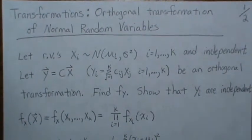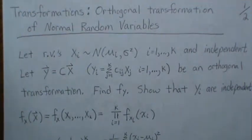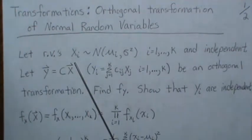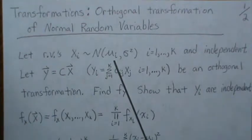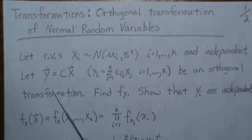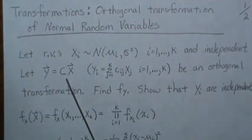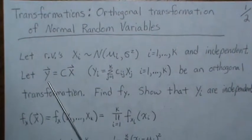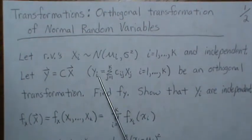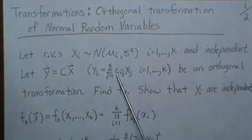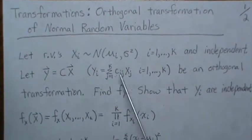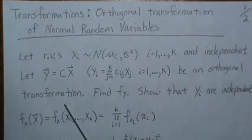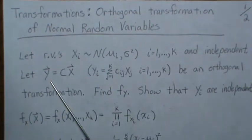In the previous video we defined what a linear transformation was, and then a specific kind called an orthogonal transformation. Here we let the X's be independent normal random variables with different means but the same variance, and we let the orthogonal transformation be C, a K-by-K matrix, times our random vector, yielding another random vector. In scalar notation, the i-th element is the i-th row of C dotted with the vector. We want to find the distribution of Y and show that the Y's are independent.